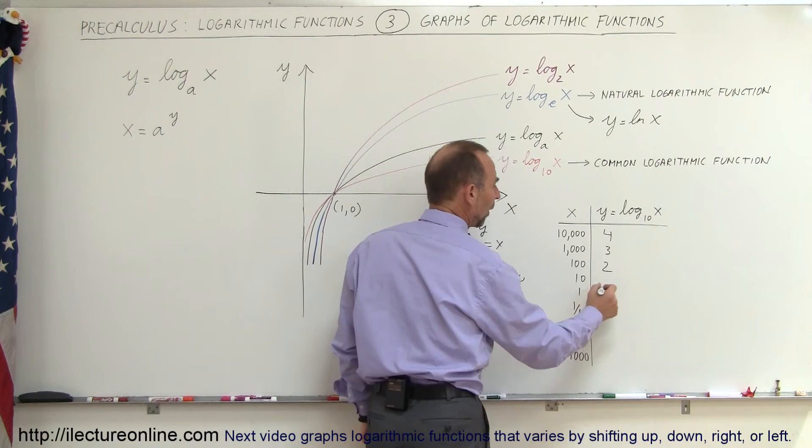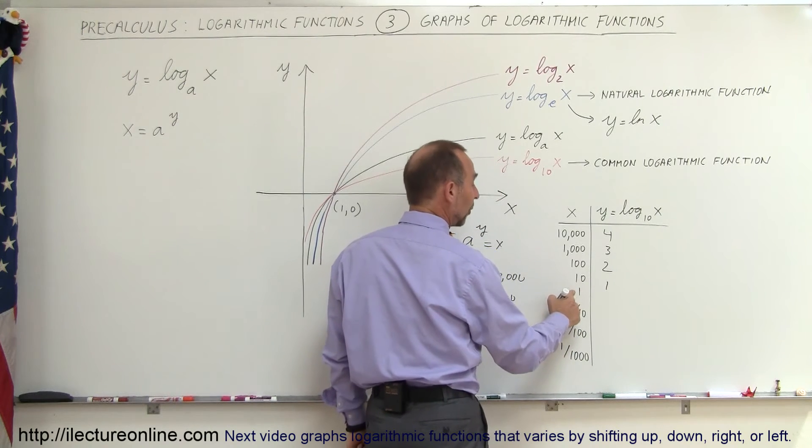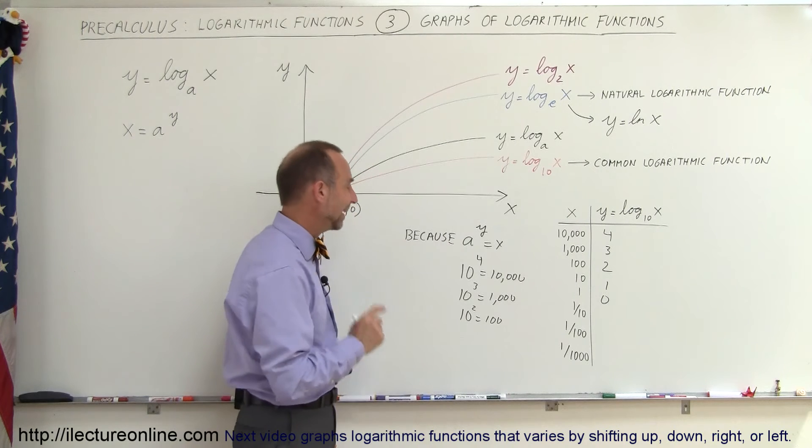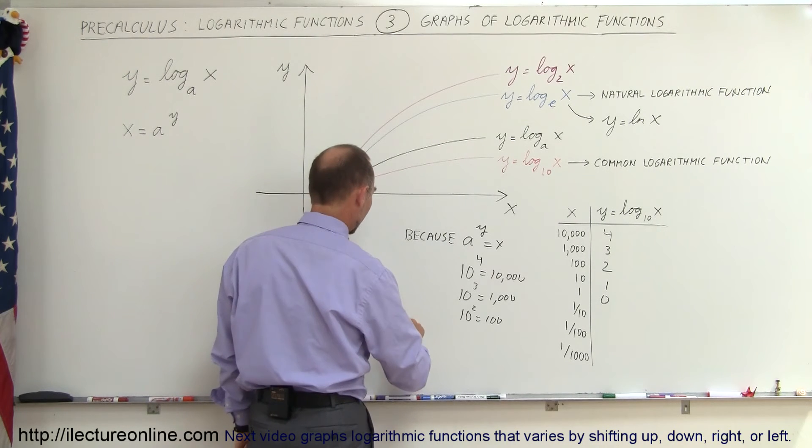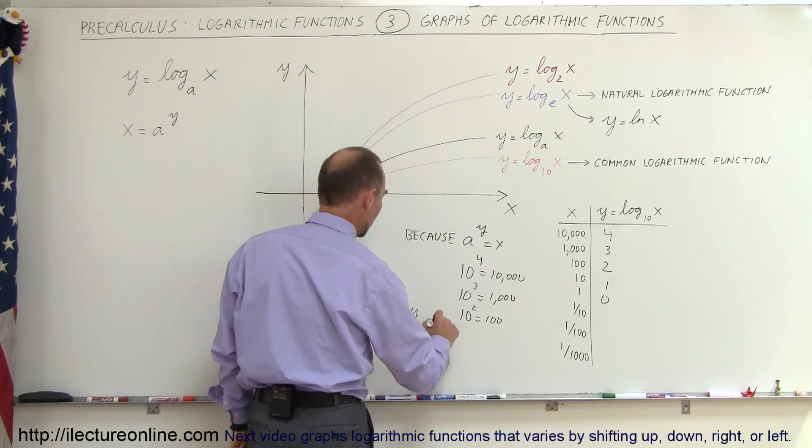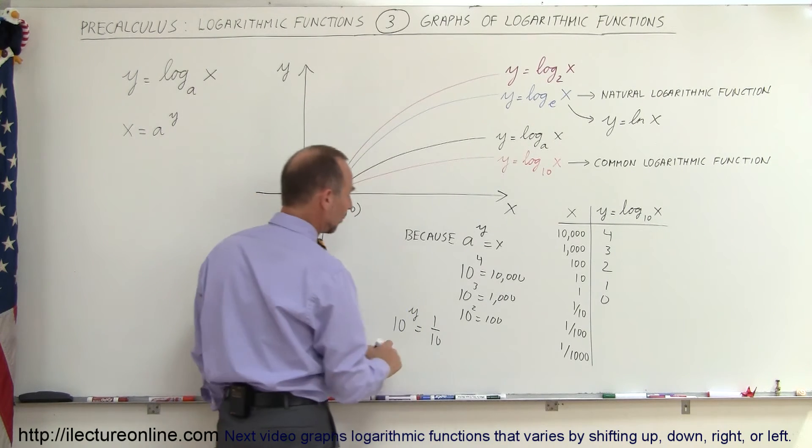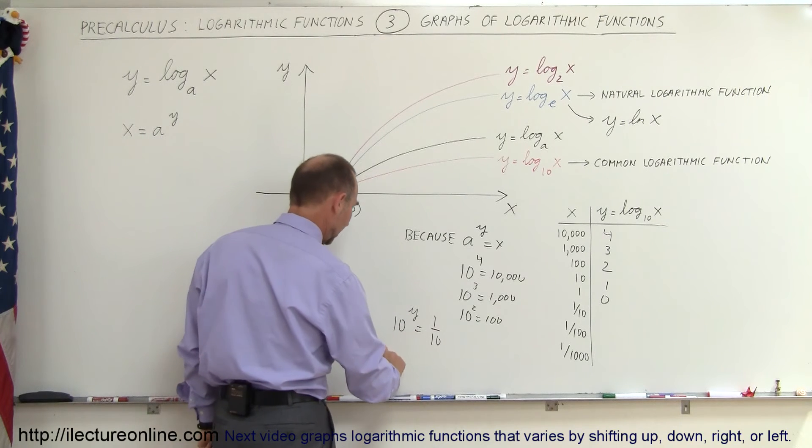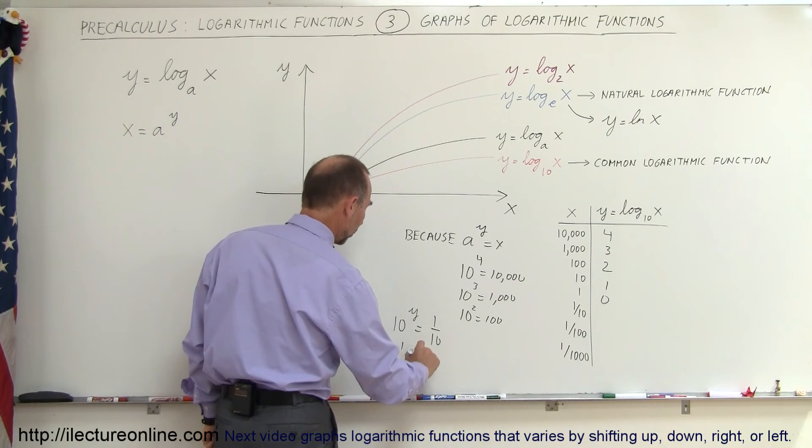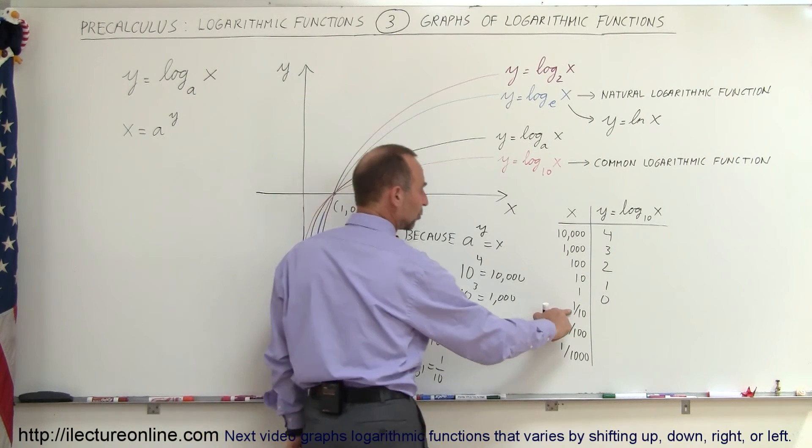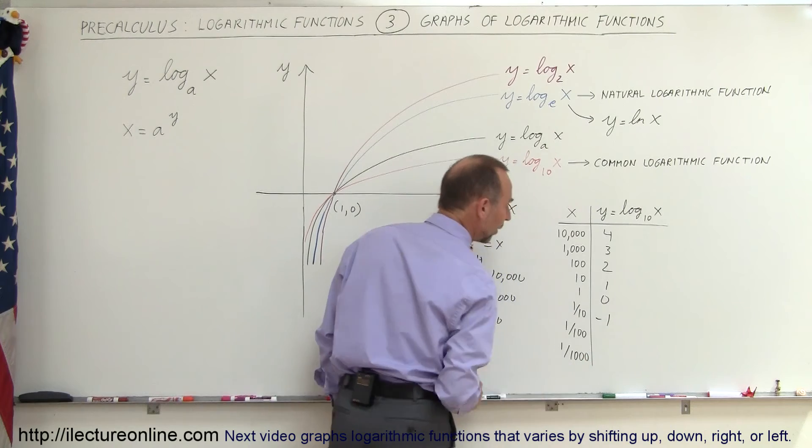So, when x is equal to 10, y is equal to 1. When x equals to 1, y is equal to 0. Now, what if x is equal to 1 tenth? So, now you say, well, 10 to what number gives me 1 tenth? And then you realize that y, if y is equal to negative 1, because 10 to the negative 1 is equal to 1 over 10 to the 1, which is equal to 1 over 10. In other words, when x equals 1 tenth, y is equal to minus 1.